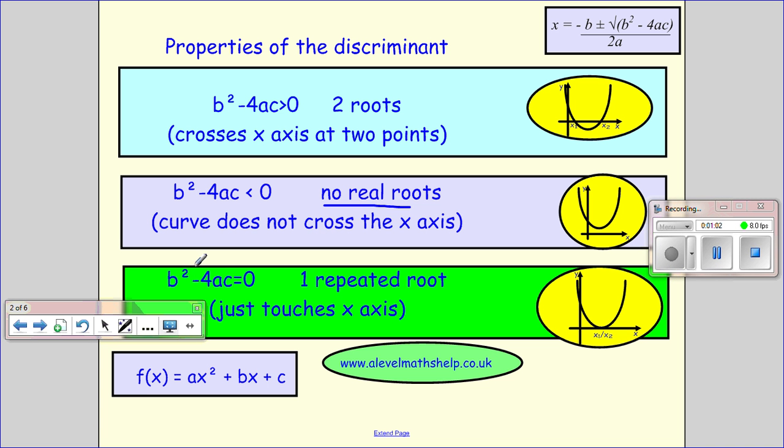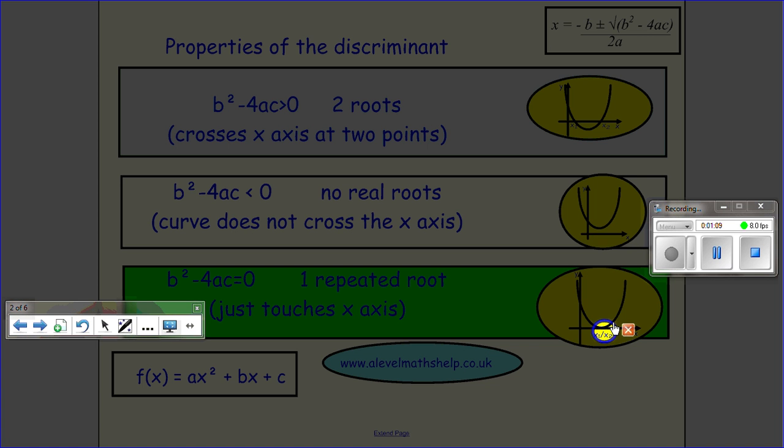And if we have b² - 4ac equals 0, we have one repeated root. That means we just touch our x-axis without crossing it.